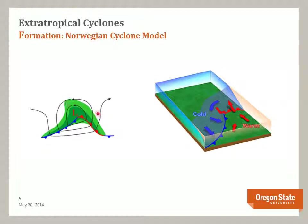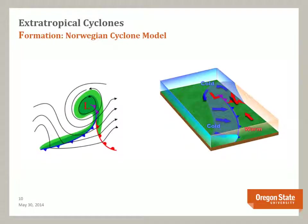As the wave intensifies, both cold and warm fronts become better organized. The wave becomes a mature low-pressure system, while the cold front, moving faster than the warm front, catches up with the warm front. As the cold front overtakes the warm front, an occluded front forms, shown here.